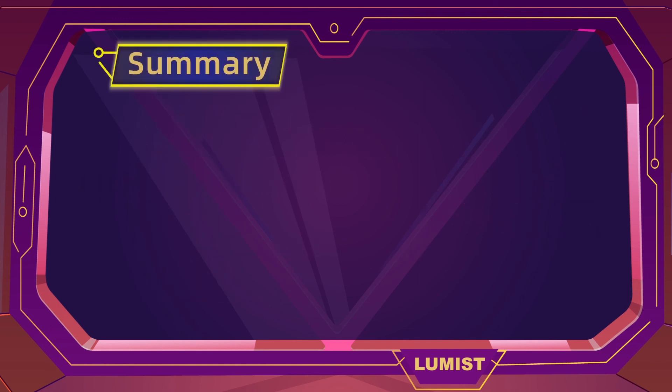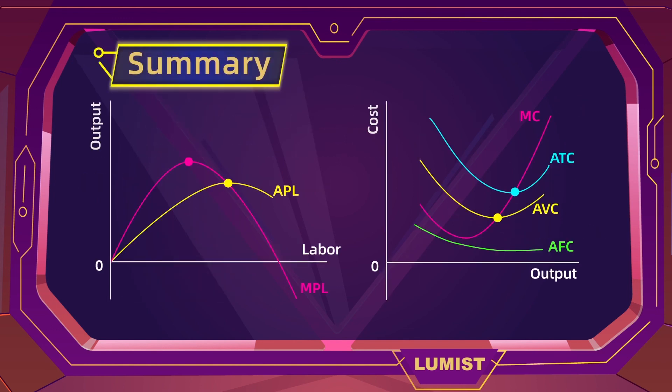In summary, we have now graphed out our production and cost curves for a firm in the short run. Because of diminishing marginal returns after a certain point, our production will first increase and then decrease. Conversely, for our cost curves, they'll first decrease and then increase. In the next video, we're going to discuss firm production costs in the long run.